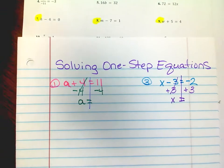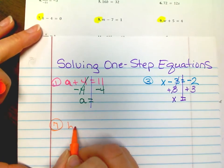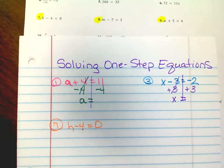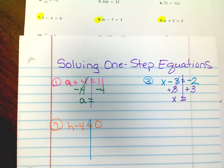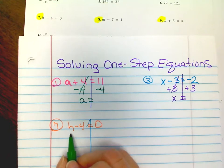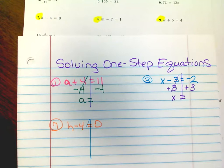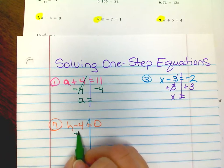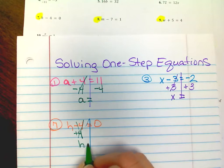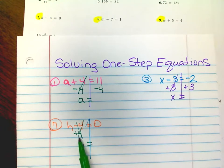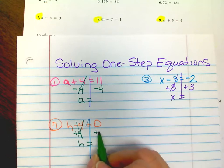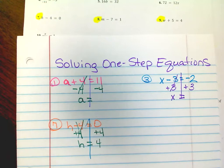Let's look at number 7. H minus 4 equals 0. I want to show my sides. I see h and I'm going to get h by itself. I look at the negative 4 — I want to make that 0. So if I have a negative 4, I'm going to add 4 to get my 0. That leaves me with h equals. But whatever I do to this side, I must do to this side. So if I added 4 on this side, I must add 4 on that side, and then you get h equals 4.